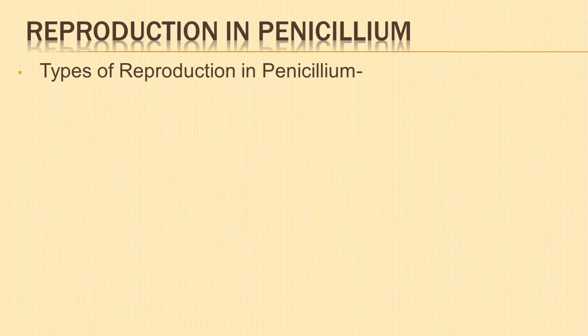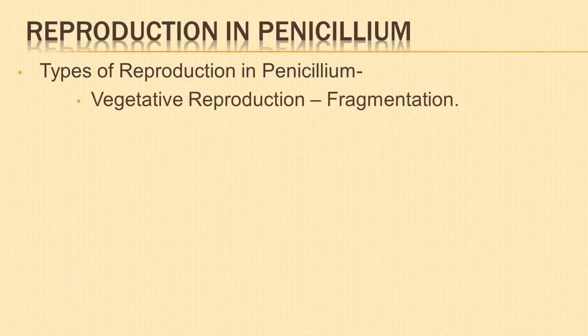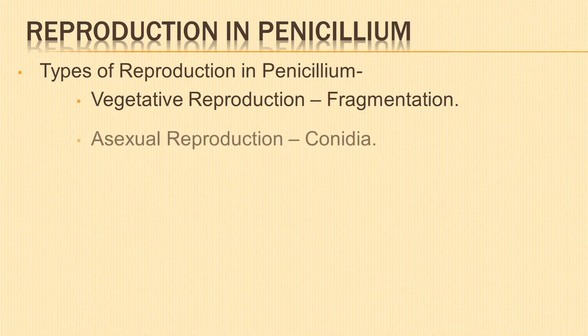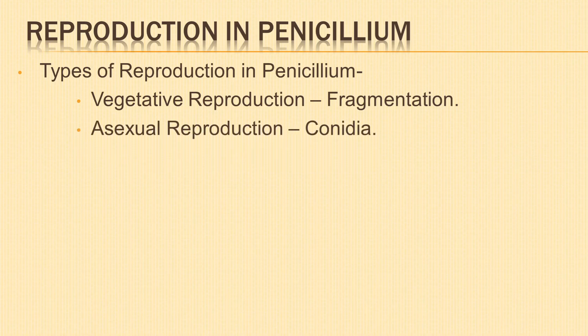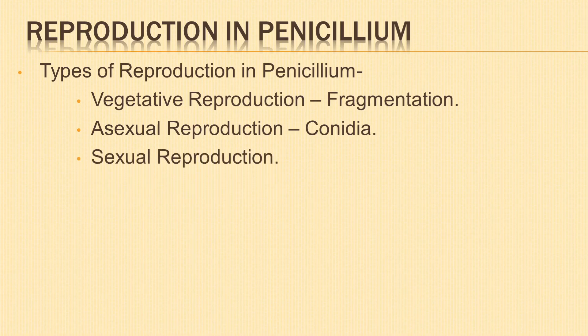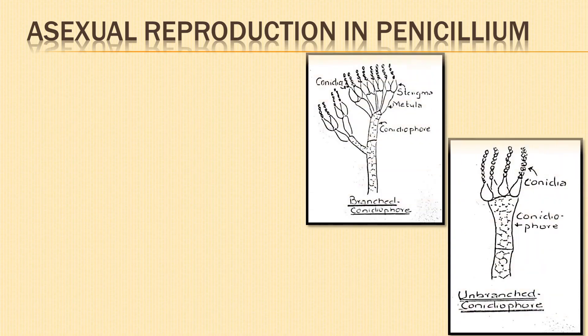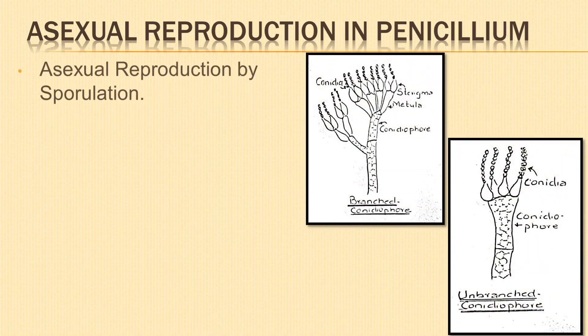Let us learn about reproduction in penicillium. The different modes of reproduction seen in penicillium are: vegetative reproduction by fragmentation, where the hyphae break up accidentally into several fragments and each fragment by repeated divisions grows into a mycelium; asexual reproduction by conidia, which is dominant and is the main mode of reproduction; and finally, sexual reproduction.